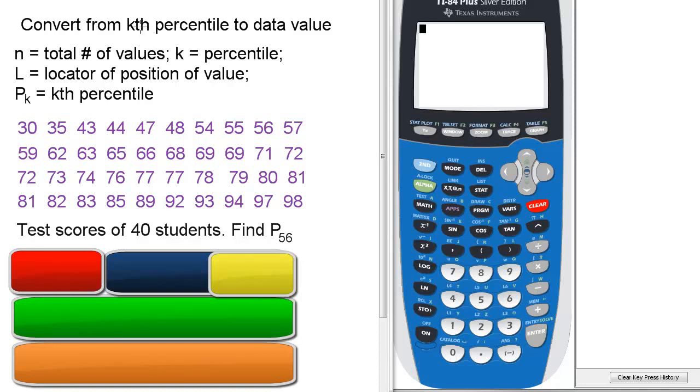So we want to convert from kth percentile to data value. n will be the total number of values, k is the percentile, l is the locator of position of value, and p sub k is the kth percentile.